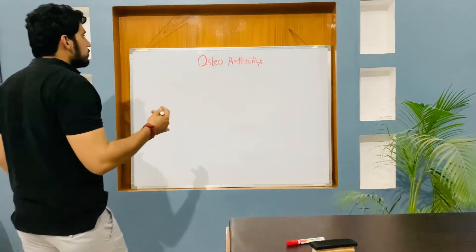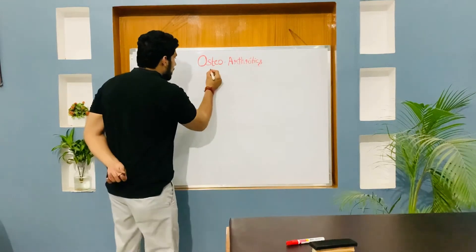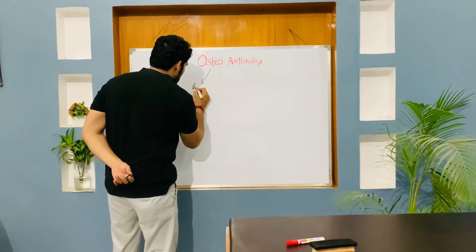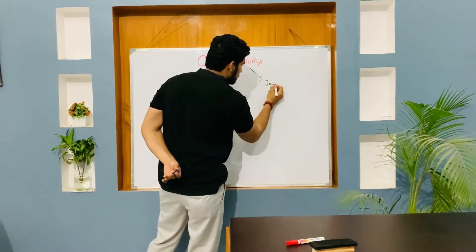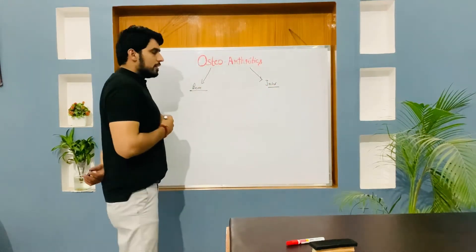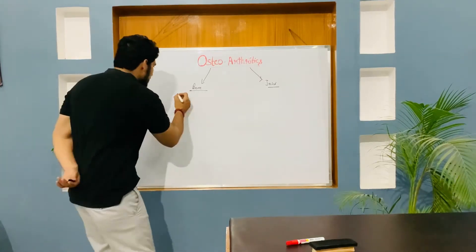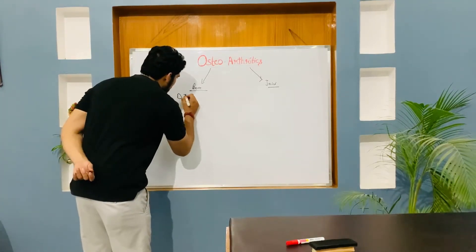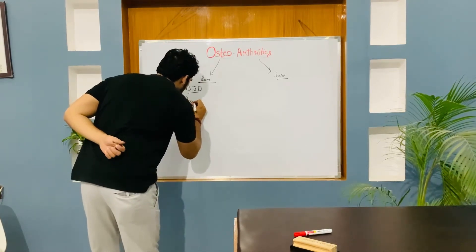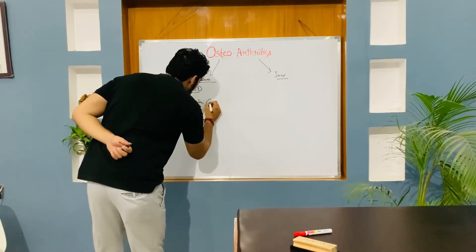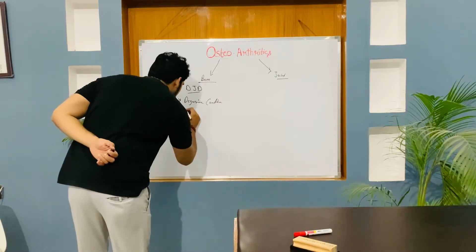Today we will study about what is osteoarthritis. Osteo means bone and arthritis means joint, so osteoarthritis is a joint-related condition. It is also known as a degenerative condition or wear-and-tear arthritis. It is also called degenerative joint disease.